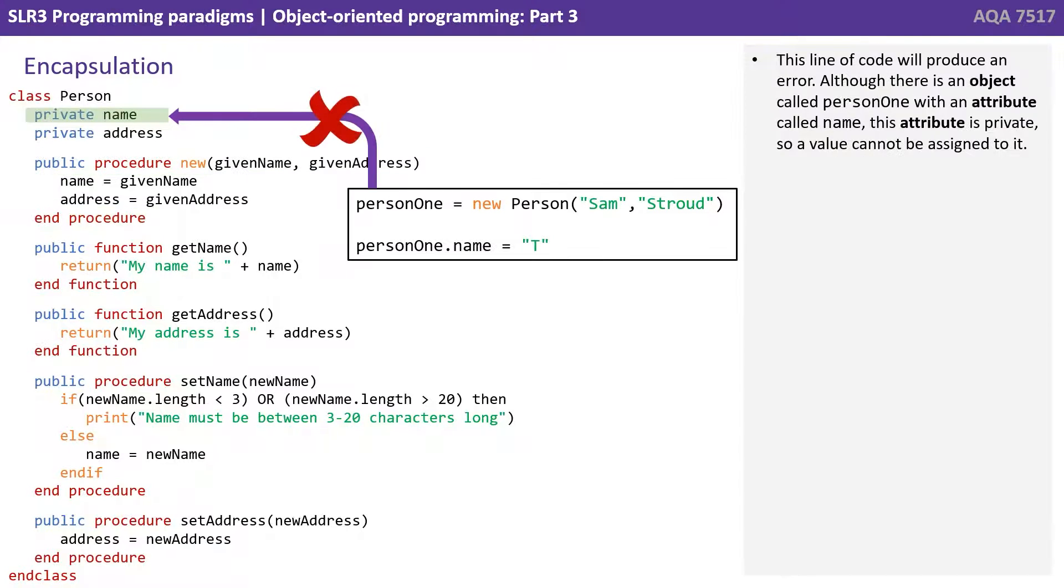This line of code will produce an error. Although there is an object called person1 with an attribute called name, its attribute is private, so a value cannot be assigned to it.